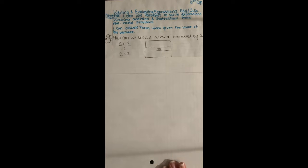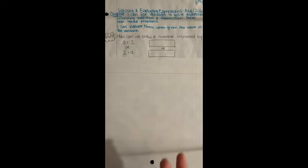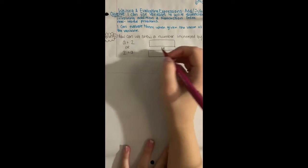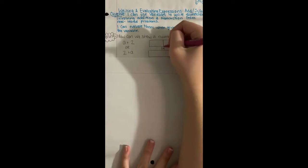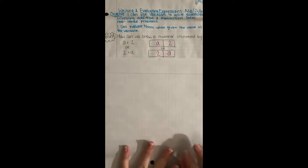How can we show a number increased by 2? So we know we can write a plus 2 or 2 plus a. Since addition is commutative, we can write it either way. We can also use tape diagrams or models. So I can take an entire model and I can show a and 2, or I can also show 2 and a.